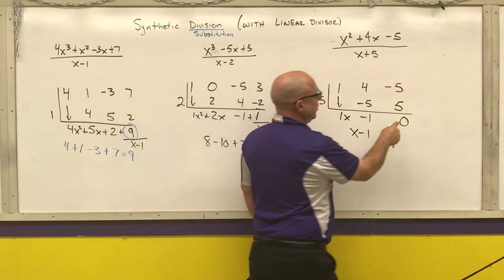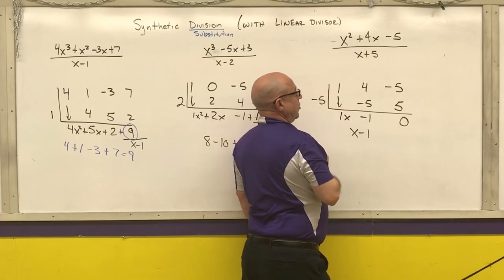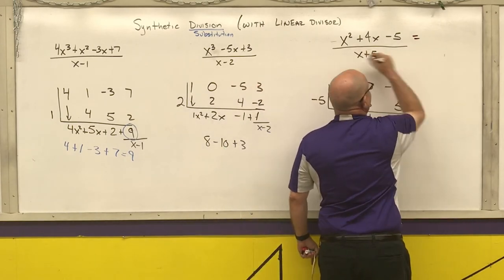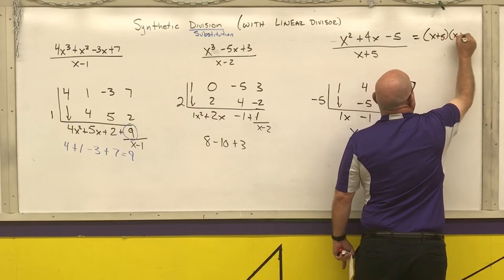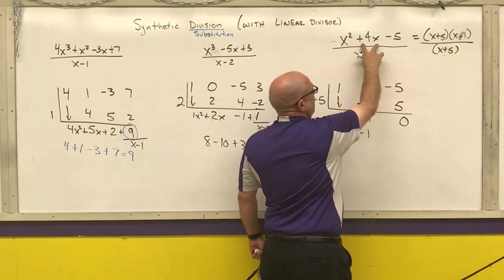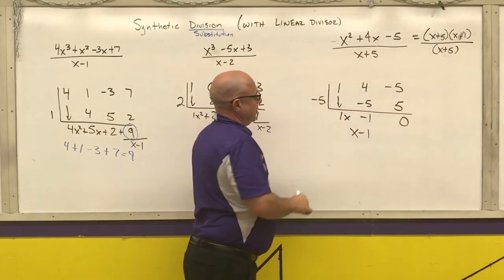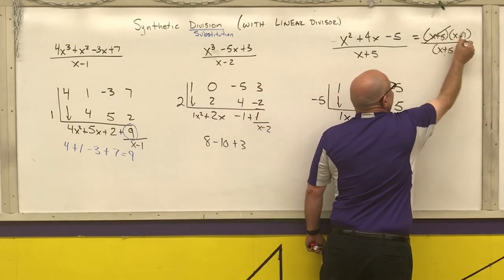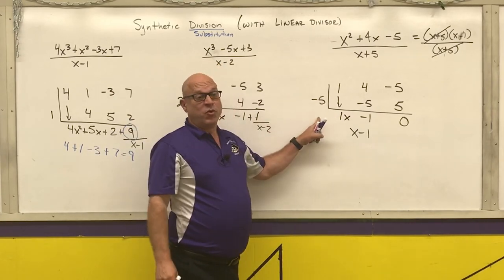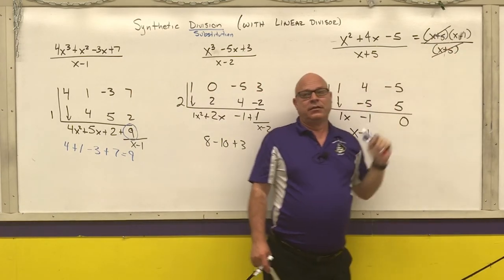Note that if the remainder is zero, that means you evenly divided your divisor into your dividend. You should see that the top polynomial is the exact same thing as x plus 5 times x minus 1, divided by x plus 5 — two numbers that multiply to negative 5 and add to 4 would be 5 and negative 1, and you're left with x minus 1. Sometimes it would be quicker to just factor by inspection and realize that things cancel out.